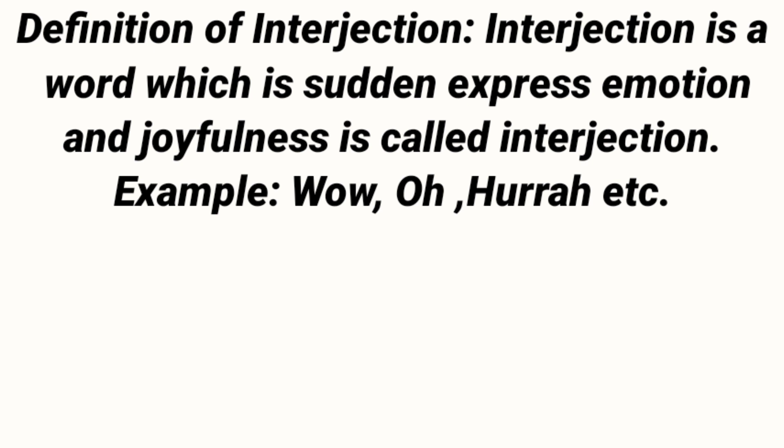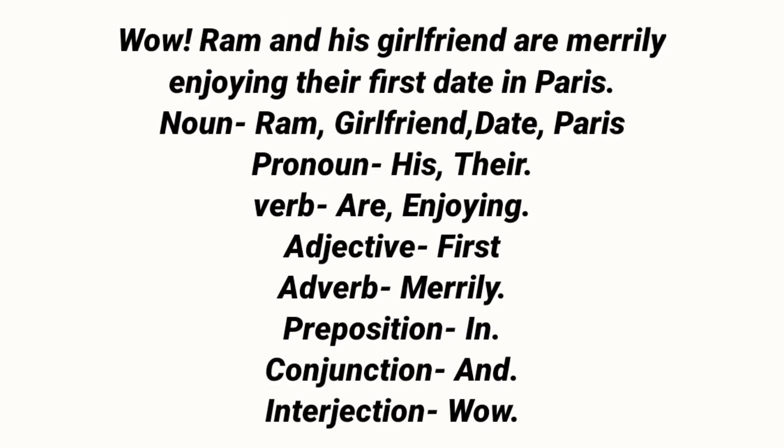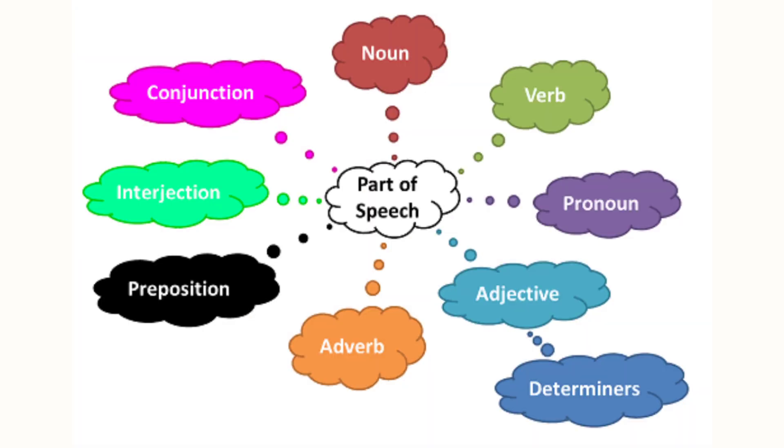Ab woh khaas sentence jo aap ka intezaar tha: 'Wow! Ram and his friends are merely enjoying the first taste of Paris.' Yahan dekhiye: 'Ram' - noun, 'his' - pronoun, 'are enjoying' - verb, 'first' - adjective, 'merely' - adverb, 'in' - preposition, 'and' - conjunction, 'wow' - interjection. Is tarah se parts of speech ke saare 8 hisse ek hi sentence mein aate hain.